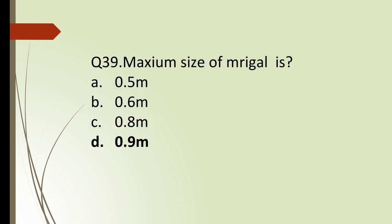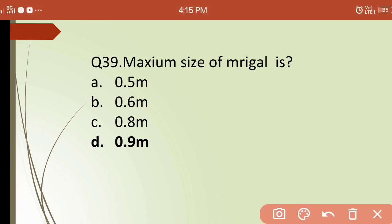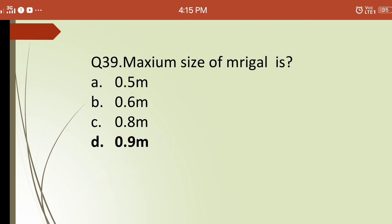Thirty-ninth question: what is the maximum size of mrigal? Options are: (a) 0.5 m, (b) 0.6 m, (c) 0.8 m, (d) 0.9 m. The correct answer is (d) — mrigal can grow up to a maximum size of 0.9 meters.